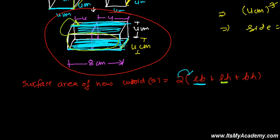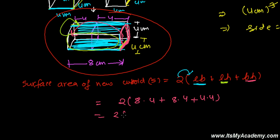Breadth times height represents this side surface, and the exactly similar surface on the other side — so twice of BH. Now substituting: length is 8 cm, breadth is 4 cm, height is 4 cm. So it's 2 times (8×4 + 8×4 + 4×4) = 2 times (32 + 32 + 16) = 2 times 80 = 160 cm². This is the total surface area of the new cuboid.